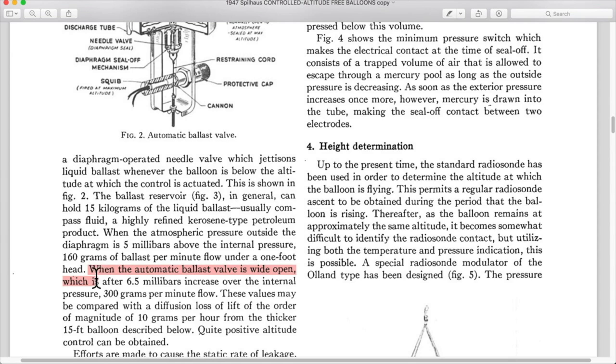When the automatic ballast valve is wide open, which is after 6.5 millibars increase over the internal pressure. Let's see. What is 6.5 millibars? That is 650 pascals. Well, I should remember that. You just multiply that times a hundred to get pascals. When it's 650 pascals over the internal pressure, 300 grams per minute flow.